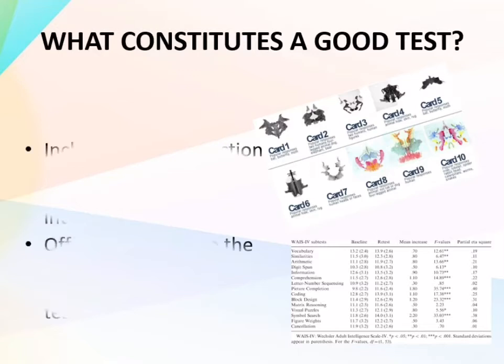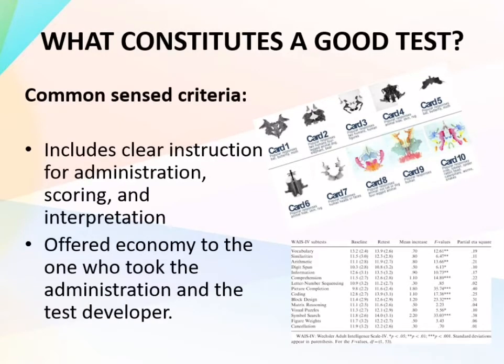Let us proceed to discussing what constitutes a good test. The first is common sense criteria, which includes clear instructions for administration, scoring, and interpretation. Administration refers to the way the test should be conducted and what specific conditions to consider. Scoring is the process of assigning evaluative codes according to one's performance in a test, interview, or other behavior samples.